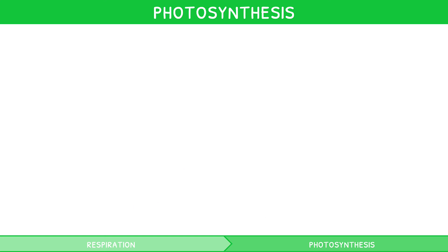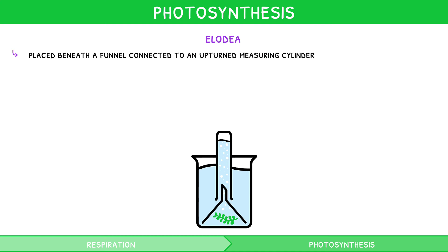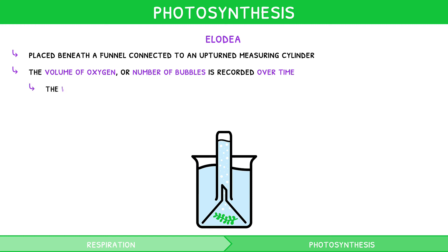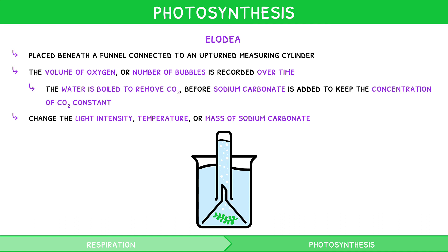Quite commonly, the exam explores these factors in the context of elodea, an aquatic plant. Elodea is placed beneath a funnel connected to an upturned measuring cylinder, so that the volume of oxygen, or number of bubbles produced, can be recorded over time. The water is boiled to remove CO2 before a set mass of sodium carbonate is added to keep the concentration of CO2 constant. One can then change the light intensity, temperature, or mass of sodium carbonate to investigate how each of the three factors affects the rate of photosynthesis.